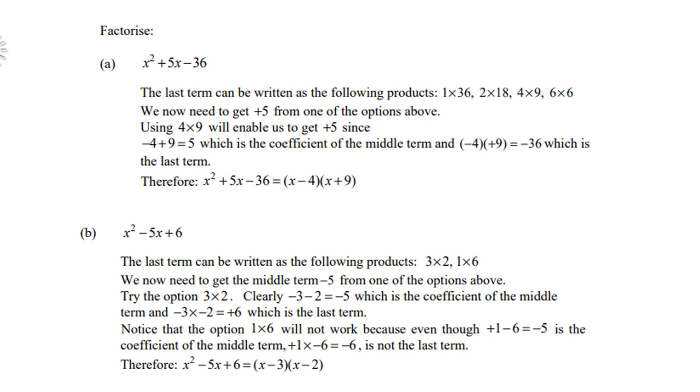So using 4 times 9 will enable us to give us a positive 5. So a negative 4 and a positive 9 will give us a positive 5, which is the coefficient of the middle term, and of course also negative 4 times 9 is a negative 36, which is the last term. So it works. So therefore, x² + 5x - 36, the factors are (x - 4)(x + 9).